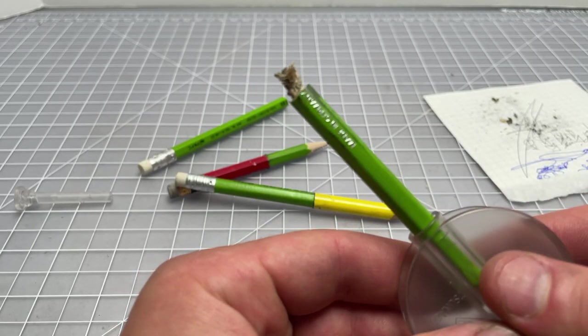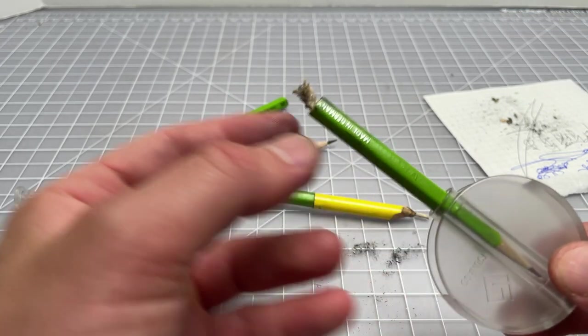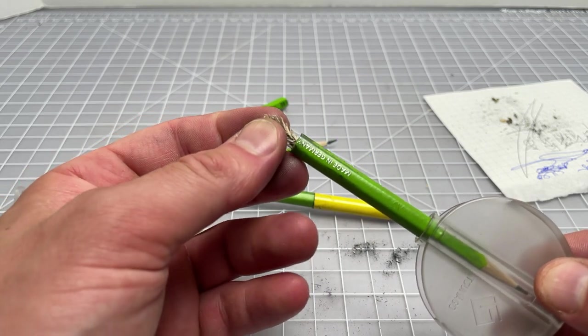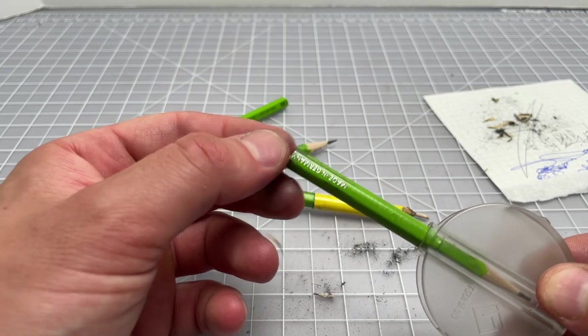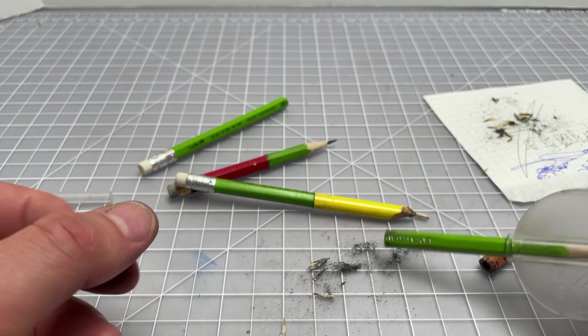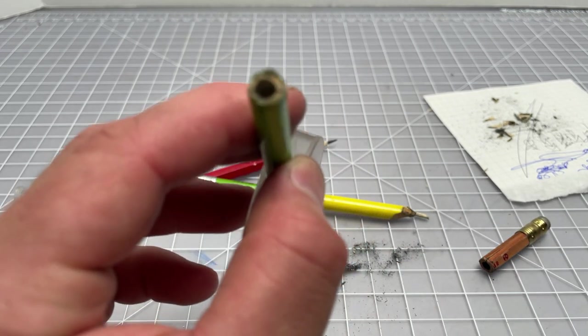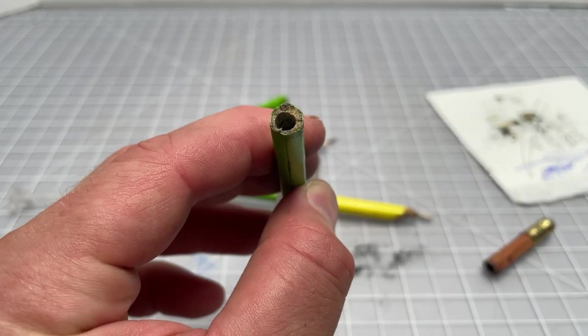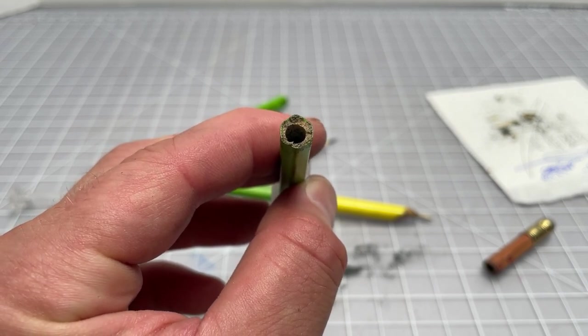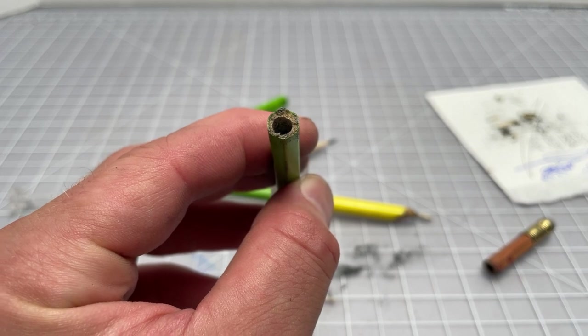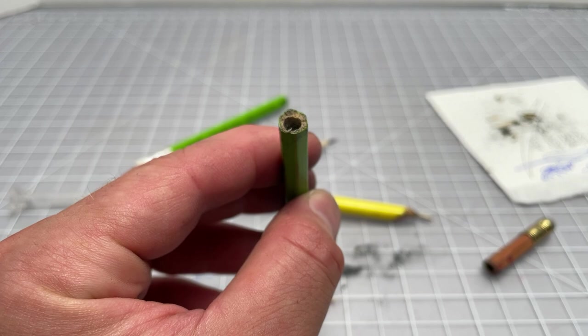As you start to use it more what happens is you'll get something like this where all the shavings are coming out but they don't come out on their own. You really need to pull them out or tap them out which is really messy and that's not really clear. Eventually you will start to get a hole and this one is a little off center unfortunately but my technique is I would say not ideal quite yet. This one isn't exactly done so I'll keep going.